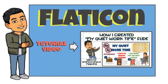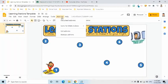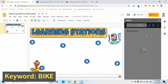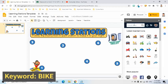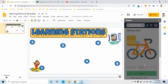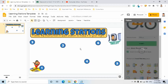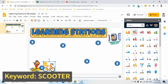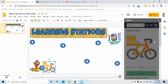Next, I am going to add flat icons. If you haven't installed this Google add-on, I have a video which demonstrates how to install it. I will also add a link in the description box. For the first keyword, I will enter the word 'bike,' select one, click the insert button, and put this icon at the first station. The next icon I will find is 'Scooter' and insert it to station 2.